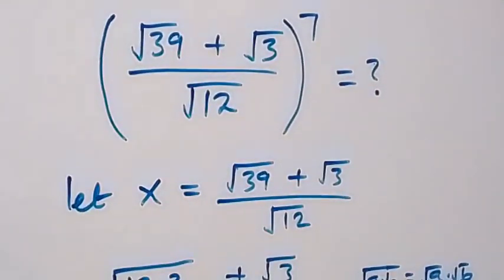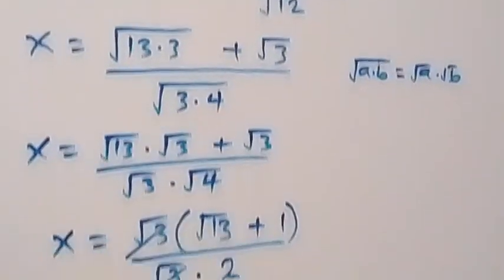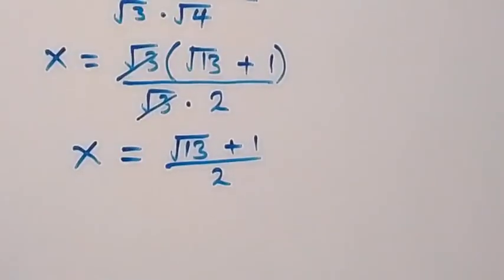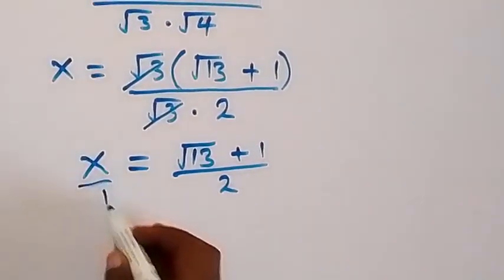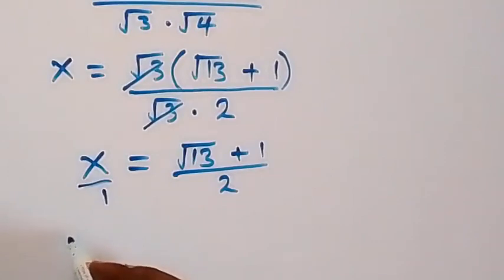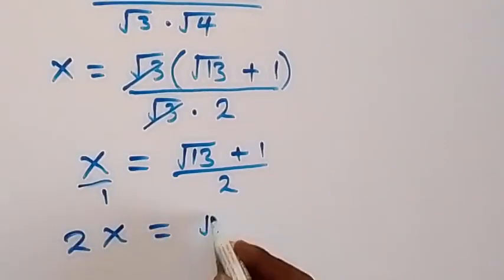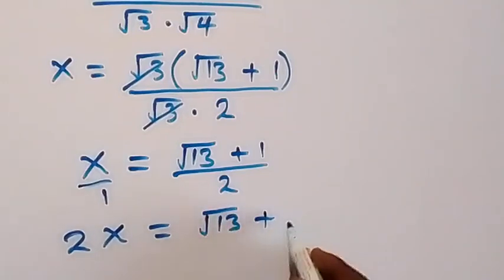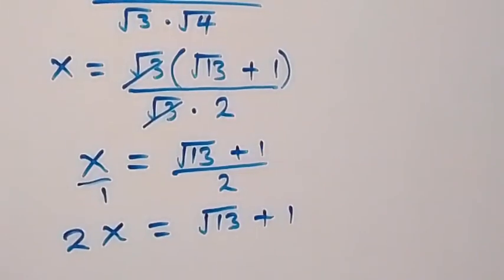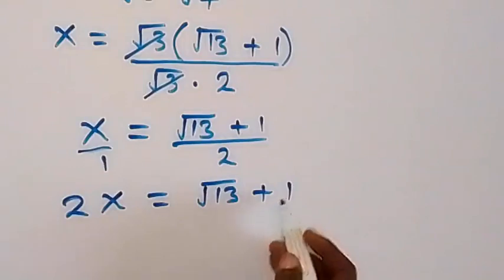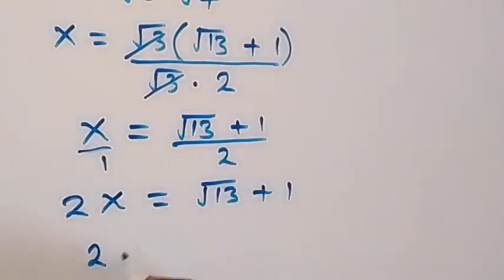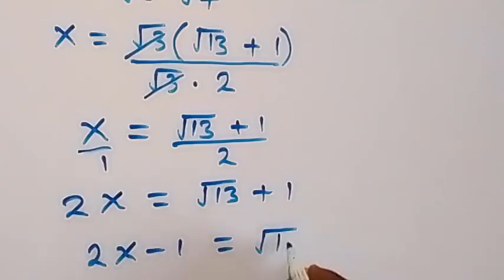Our interest is in finding x raised to power 7. From x = (√13 + 1)/2, let's cross-multiply: 2x = √13 + 1. Taking 1 to the other side gives 2x − 1 = √13.